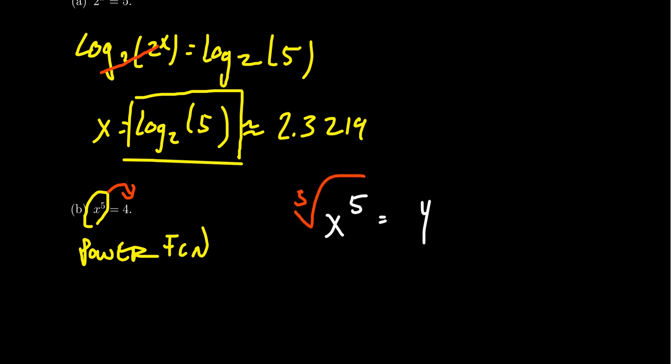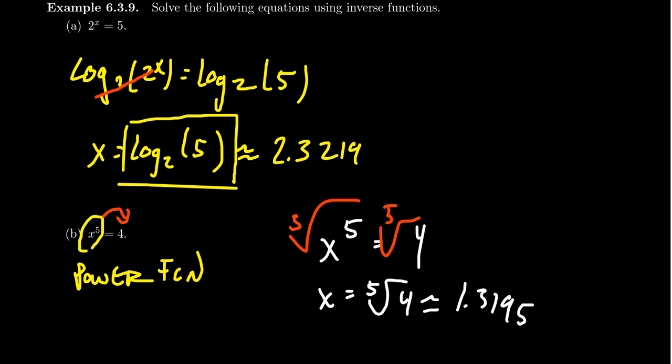Thus giving you the solution x equals the fifth root of 4. For which we can use a calculator, again, to estimate that solution to get 1.3195. But the important thing is, when you look at these two examples, a and b right here, the first one we solve using logarithms because the base is a constant and the exponent is a variable.